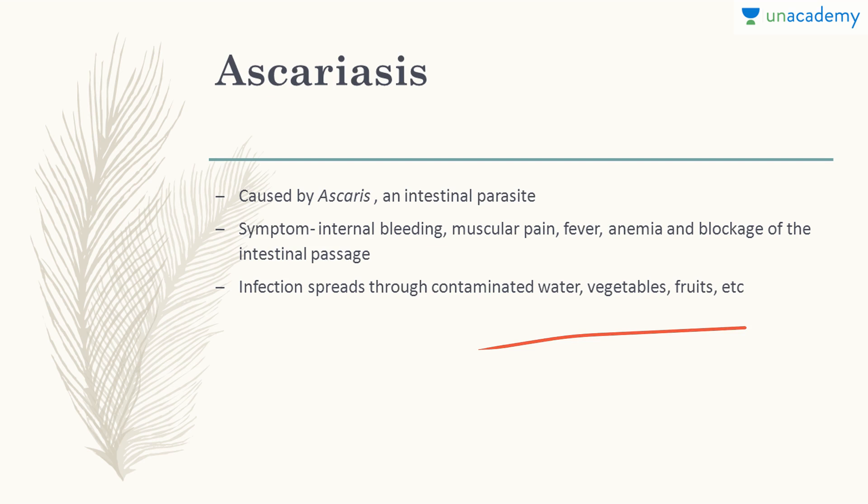The symptoms of Ascariasis include internal bleeding, muscular pain, fever, anemia, and blockage of the intestinal passage. By the way, in malaria there is also anemia because Plasmodium infects RBCs, and after division it ruptures them — causing mass hemolysis in severe malaria, which leads to anemia.